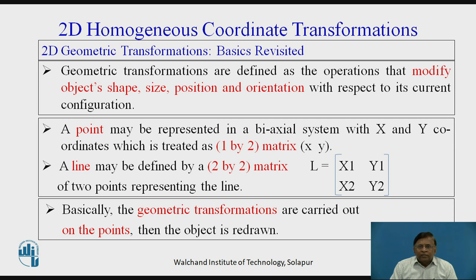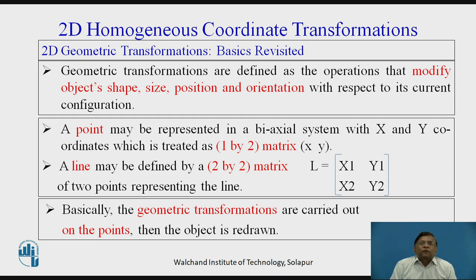Let us revise a few basic things on 2D geometric transformations which are covered in earlier videos. Geometric transformations are nothing but modifying the current position of the given object with respect to its shape, size, position, or orientation.